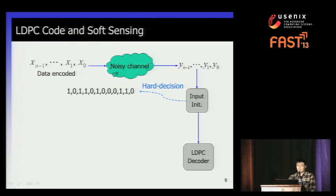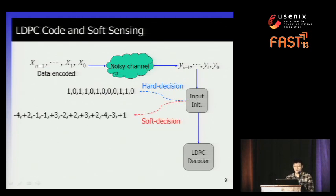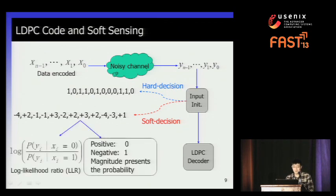For hard decision, we read a binary sequence like '10110' from NAND flash memory and feed it directly into the decoder. But for soft decision, we quantize the data into integers. Just look at the box: positive integers mean zero and negative integers mean one, and the larger the magnitude, the more likely it is a zero or one. So in this sequence, negative one and positive one are likely to be wrong because the magnitude is very small, while negative four is almost definitely data one because it has the largest magnitude — meaning the largest probability.